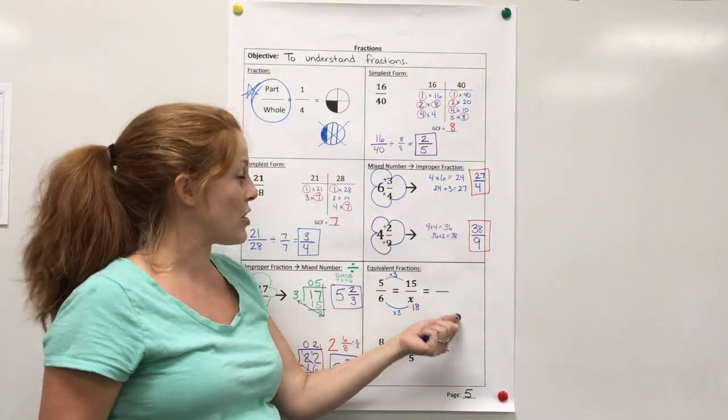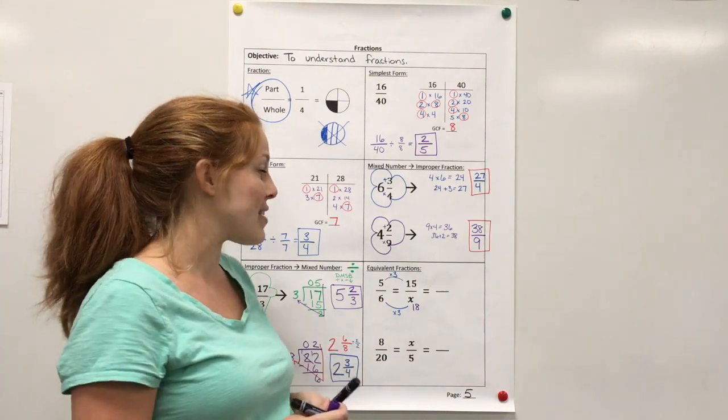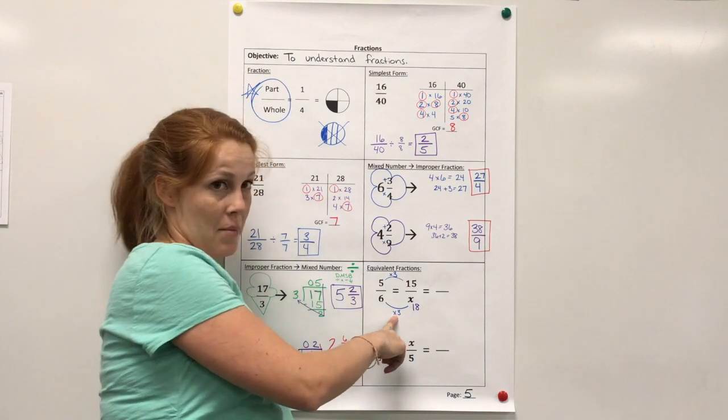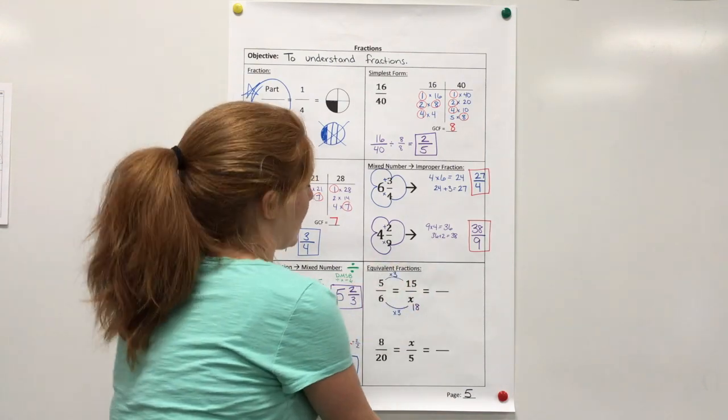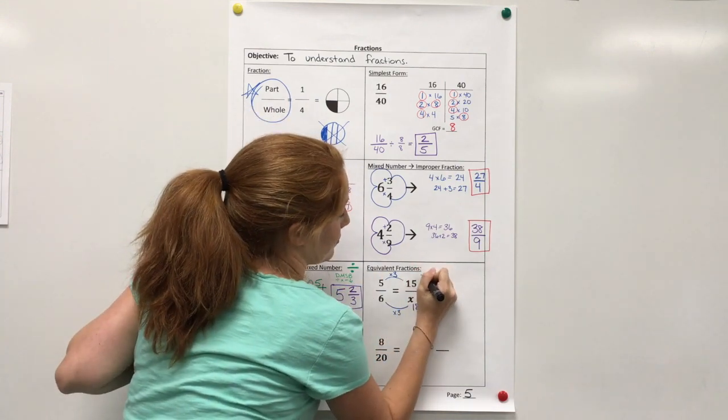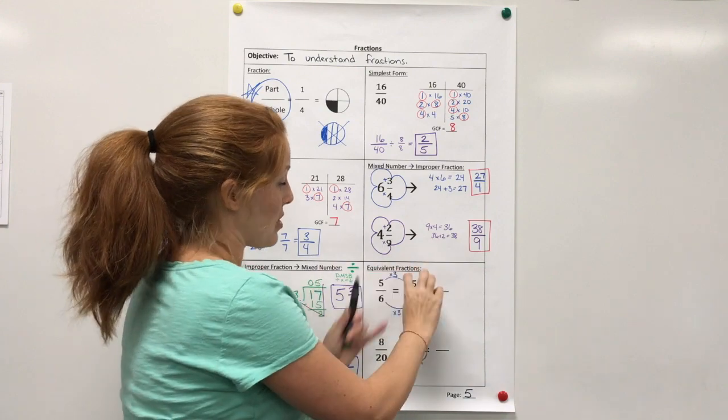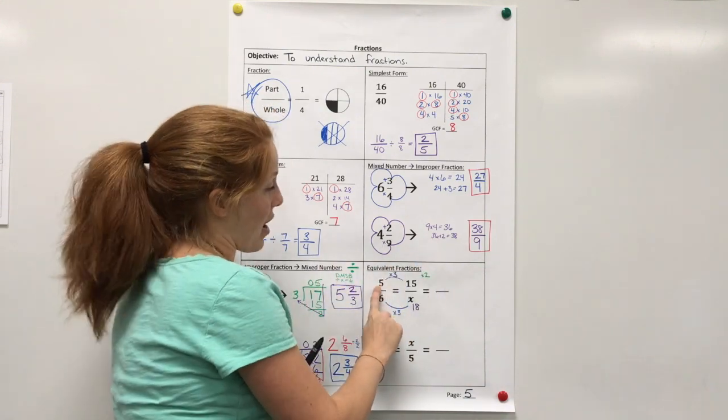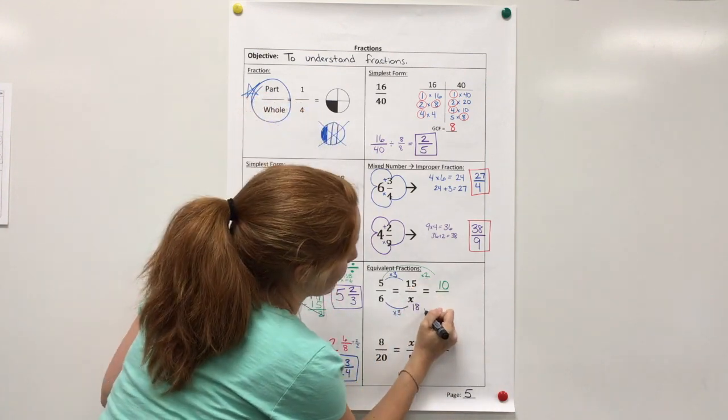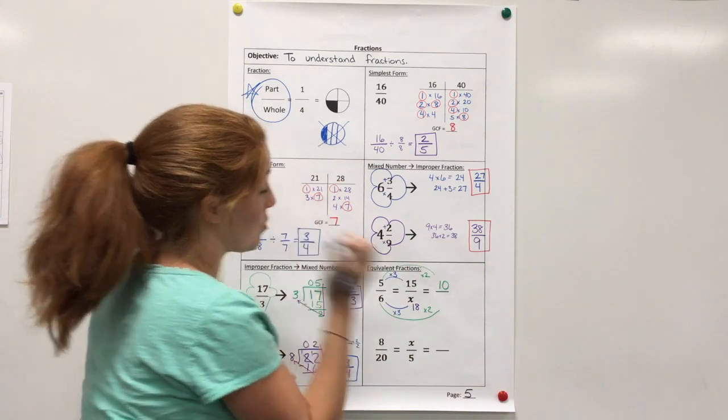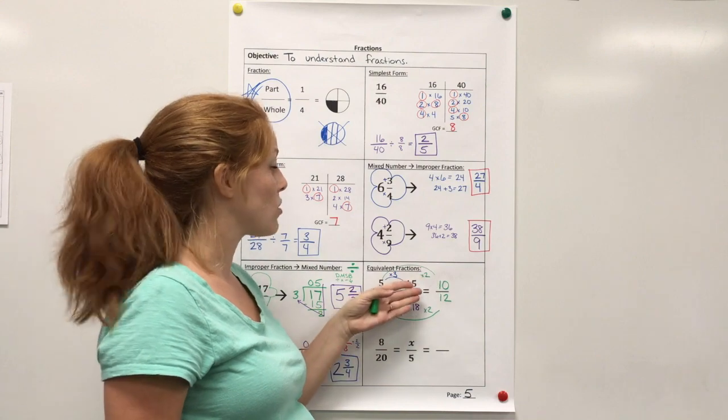Now, I put another blank here because I want to show you that you can make another equivalent fraction. In fact, you could make an infinite amount of equivalent fractions. The main thing you have to do is, whatever you do to the numerator, you have to do to the denominator. As long as you do the same thing to both numbers, multiplying or dividing, then it will be equivalent. So, let's say I wanted to do times 2. Now, I could actually do this times 2. I could do this times 2. It doesn't matter as long as I do either both of these or both of these. So, I'm going to go ahead and just do the 5. If I wanted to do 5 times 2, that would be 10. Now, since I didn't multiply by 2 here, I have to multiply it by 2 again. 6 times 2, well, that's 12. So, 5 sixths is the same thing as 15 eighteenths, is the same thing as 10 twelfths. And you could make a ton more.